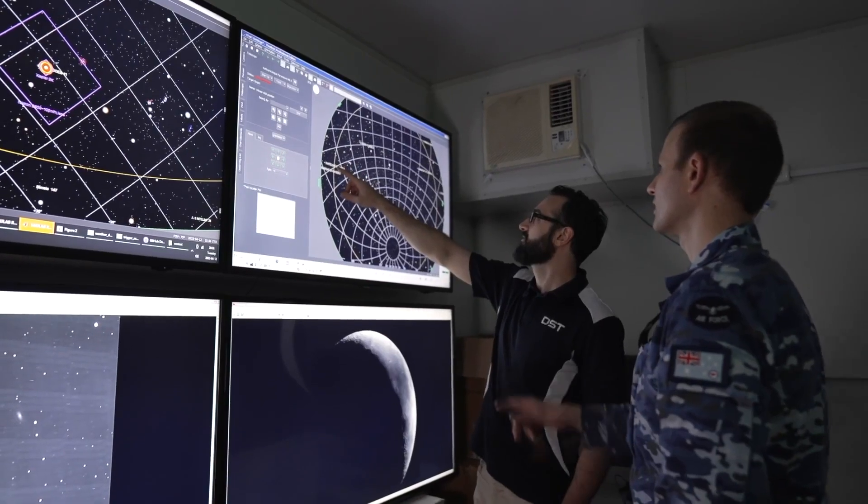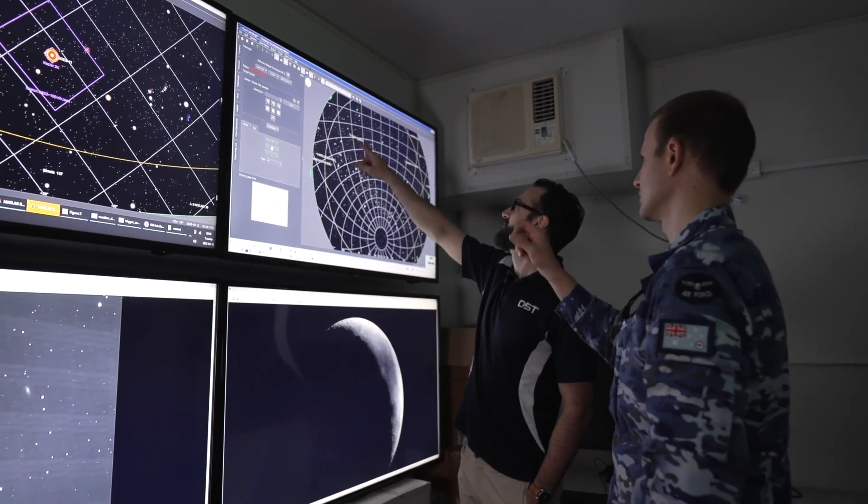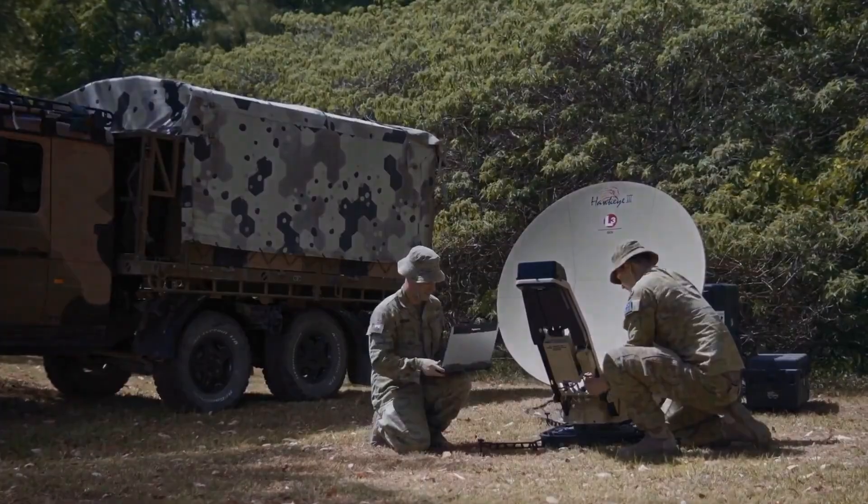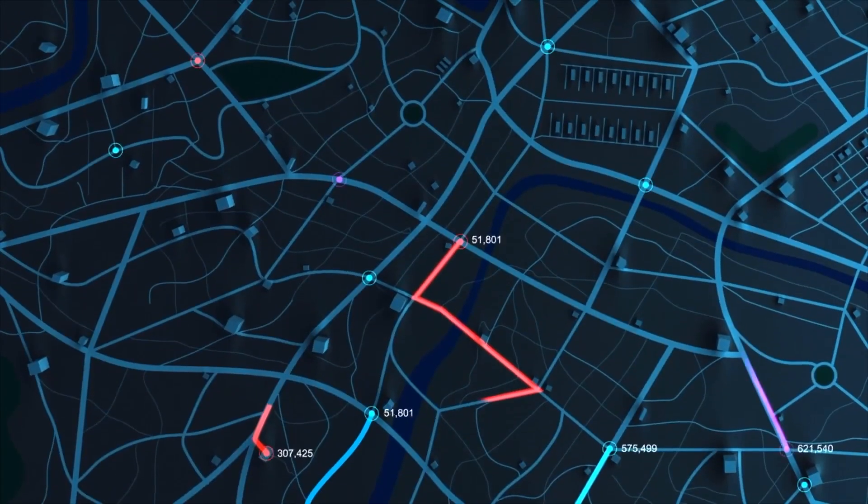There's a huge amount of ADF capability that is dependent on space: position, navigation and timing (PNT), communications, surveillance. And now we can start looking at what can we cheaply design here in Australia, get up into orbit and actually deliver for defence.